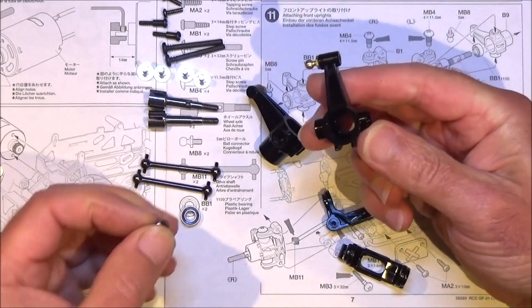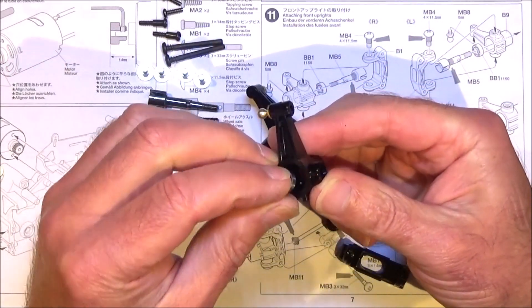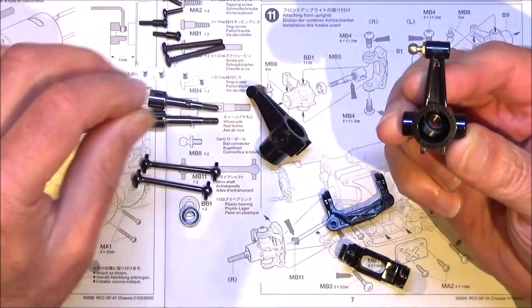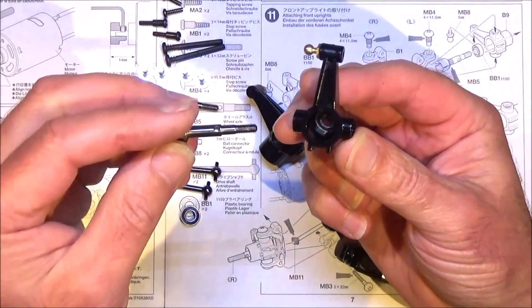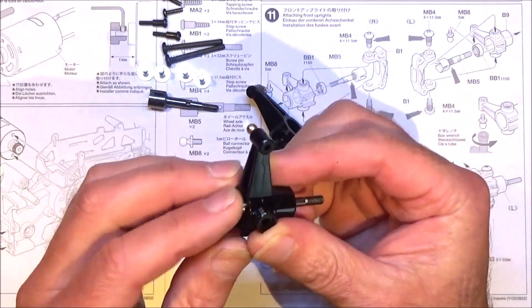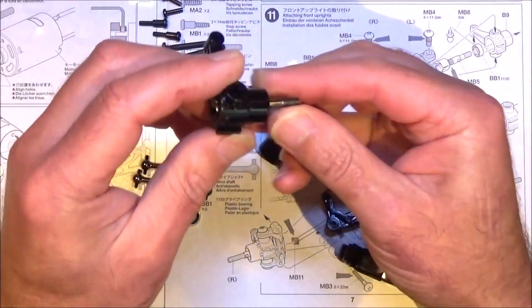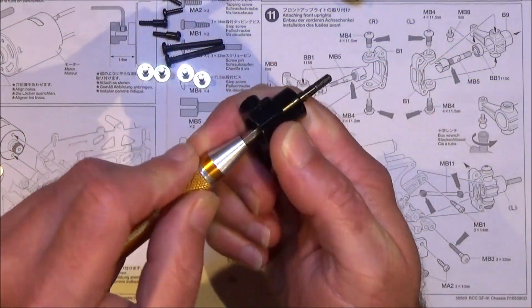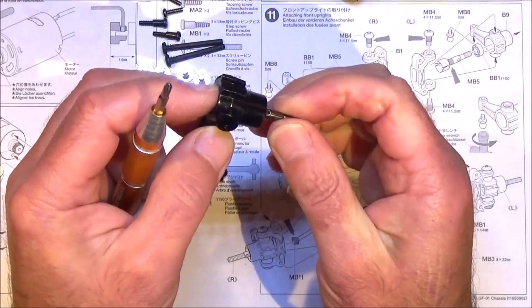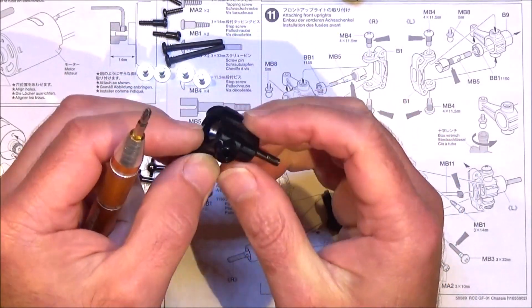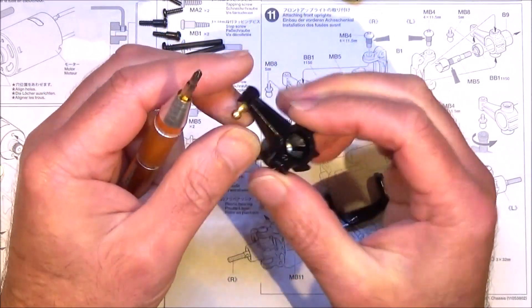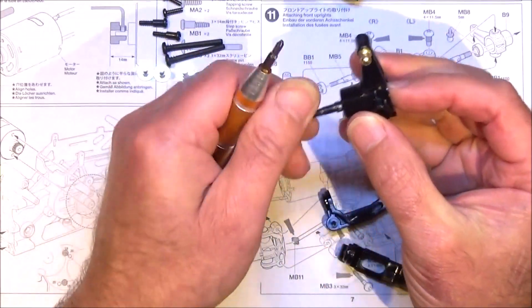Once you've done that, get your 1150 bearing or your bushings if you haven't got the bearings. Push those in and get your wheel shaft and push that into place. I've got to say those really did need a good push to get the bearings to seat into the plastic part, but it's better tighter than loose I always say.